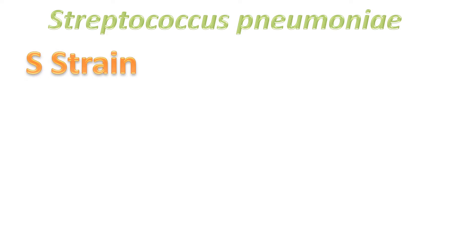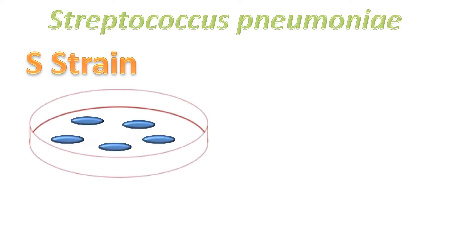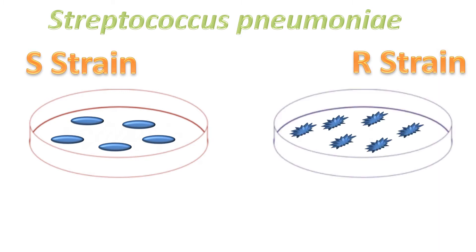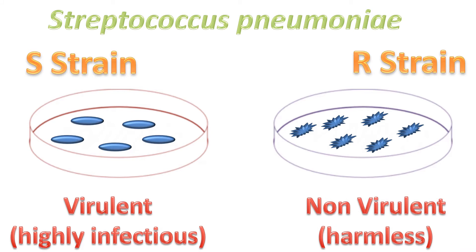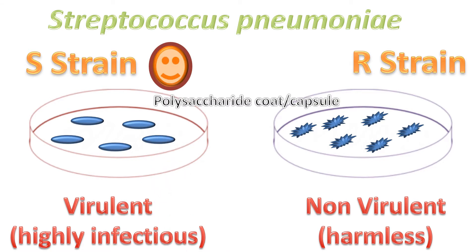Griffith used two strains of the bacterium: the S strain, which produced smooth shiny colonies, and the R strain, which produced rough colonies. The smooth colonies were virulent and highly infectious, whereas the rough colonies were non-virulent and harmless. The virulence of the S strain was due to the presence of a polysaccharide coat or capsule surrounding each cell, which is also the reason for the smooth shiny appearance of the colonies.